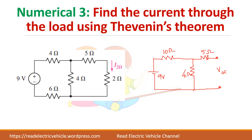This is the circuit — we have removed the load and we are going to find the voltage across this terminal. What is Voc? It is the voltage across 4 ohms, because no current will flow through 5 ohms. So this terminal voltage and the voltage across 4 ohms are the same. Apply the voltage division formula: Voc equals total 9 volts into this resistance divided by total resistance 40. So Voc equals 2.57 volts — that is the Thevenin voltage.